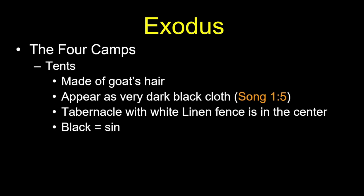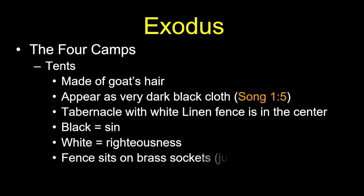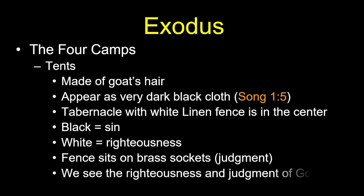Black represents, metaphorically, sin — while white represents righteousness. Looking at the tabernacle from the outside, we see the white of righteousness sitting on brass sockets. Brass is the metal that can withstand fire, and fire speaks of judgment — so brass in the Levitical sense speaks of judgment. From the exterior, looking in, we see only the righteousness and judgment of God.